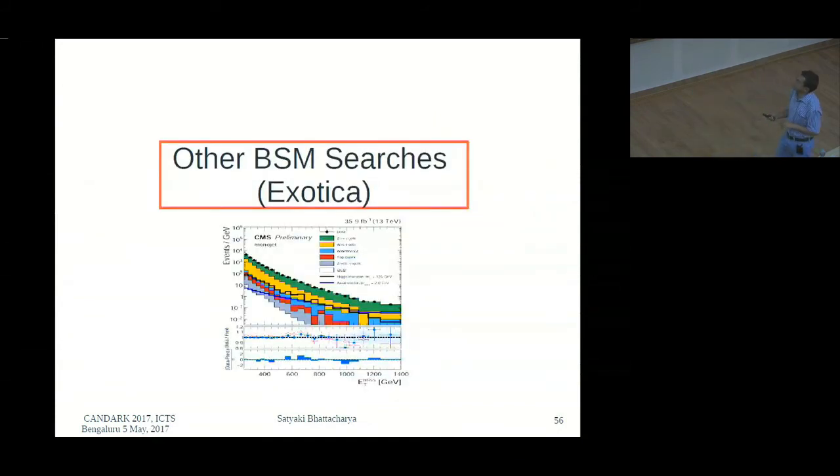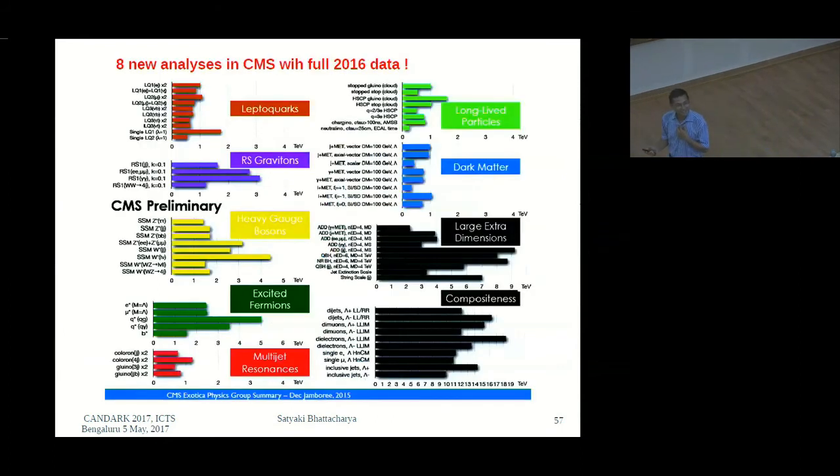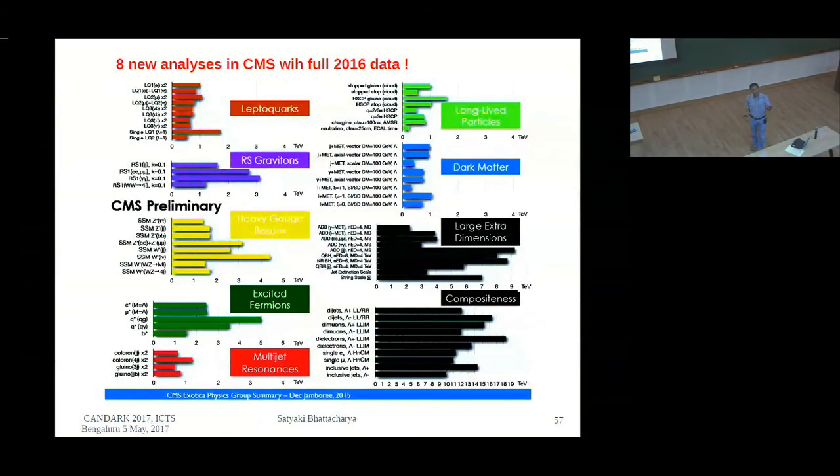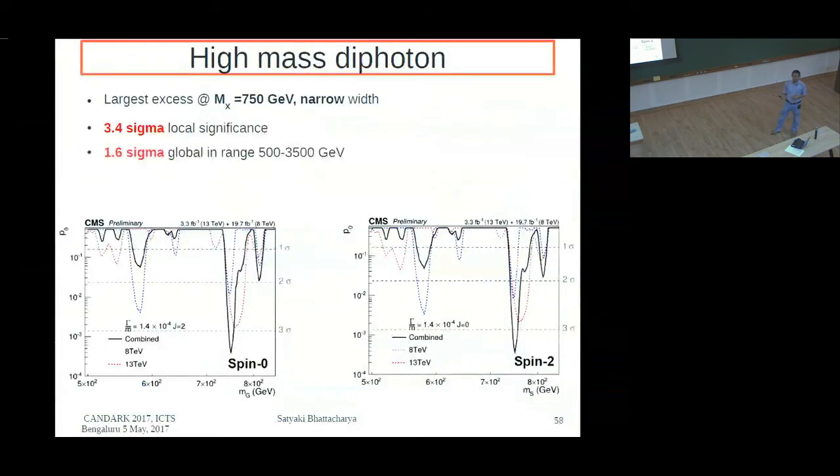Finally, moving on to BSM searches in the remaining few minutes. SUSY is also Exotica, but that has been the standard nomenclature that non-SUSY BSM is Exotica. There's a huge number of Exotica searches done both by CMS and Atlas. This was early all the searches of early CMS 13 TeV data. And now we have eight of these analyses which are completed with the full luminosity. And I'll be able to talk about one or two of those. But let me start with reminding you of an excitement that was there last year.